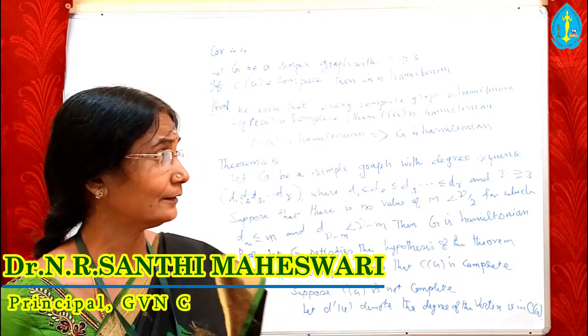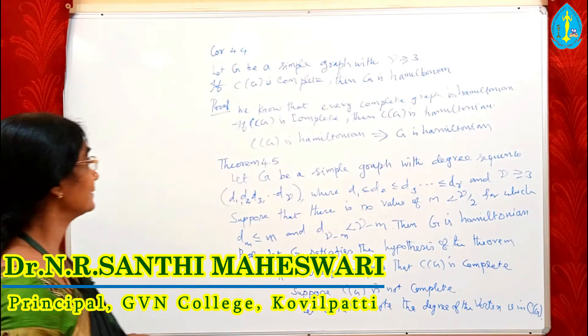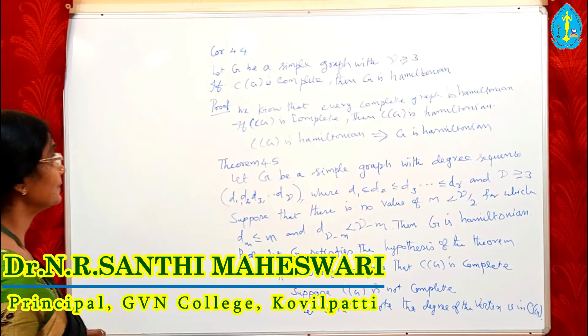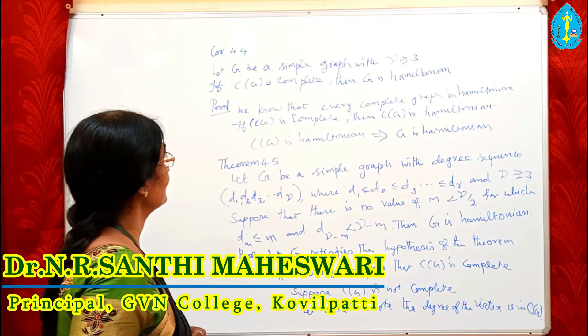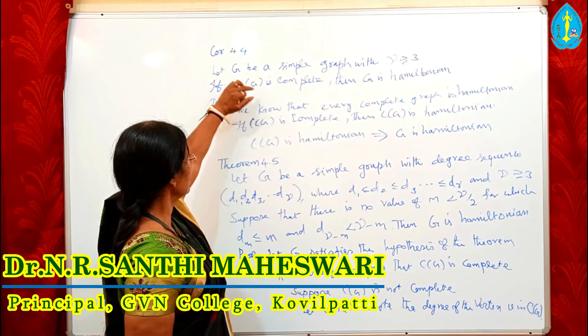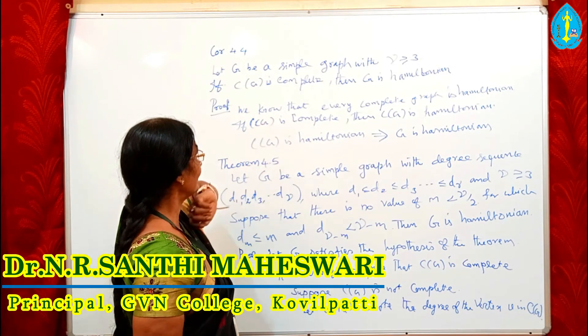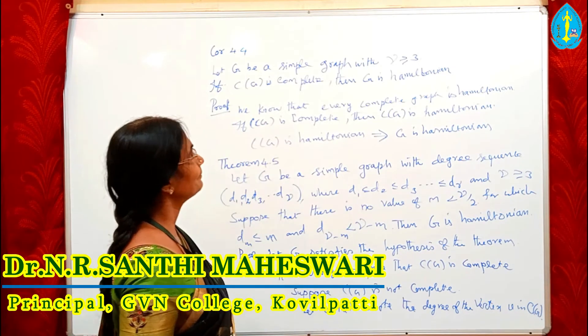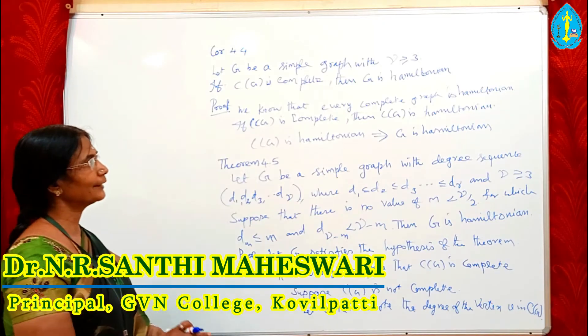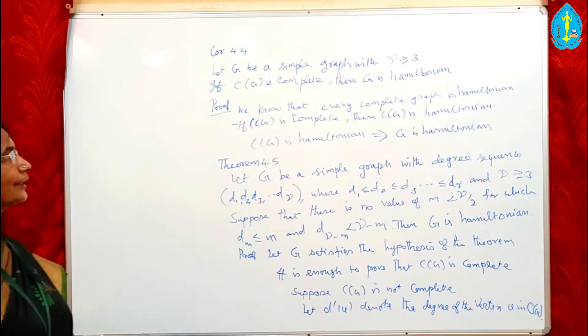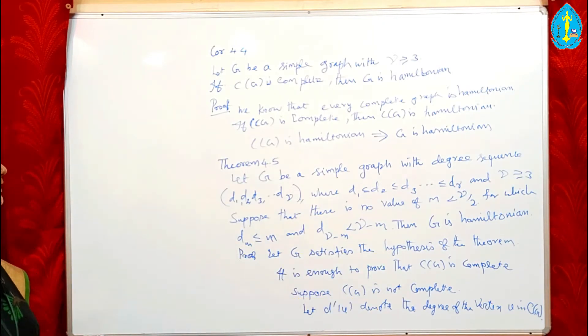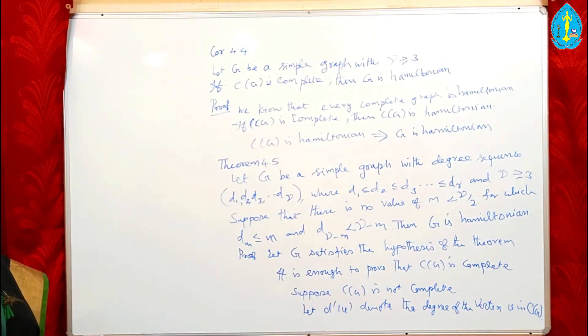Last class we have seen the closure theorem and some more results. Continuing with Corollary 4.4: let G be a simple graph with order gamma greater than or equal to 3. If C(G) is complete, then G is Hamiltonian.